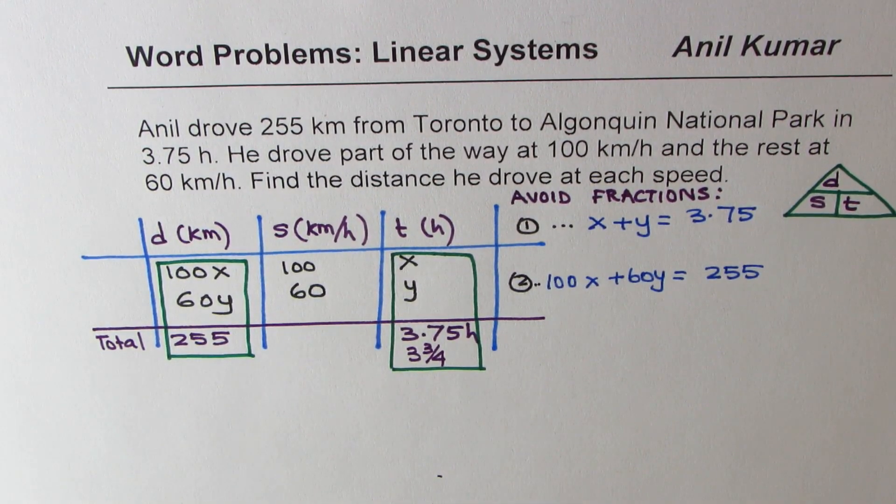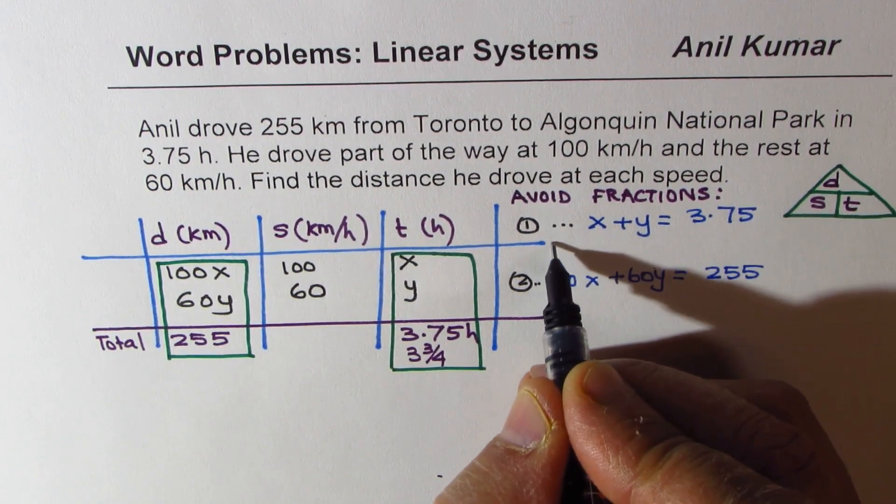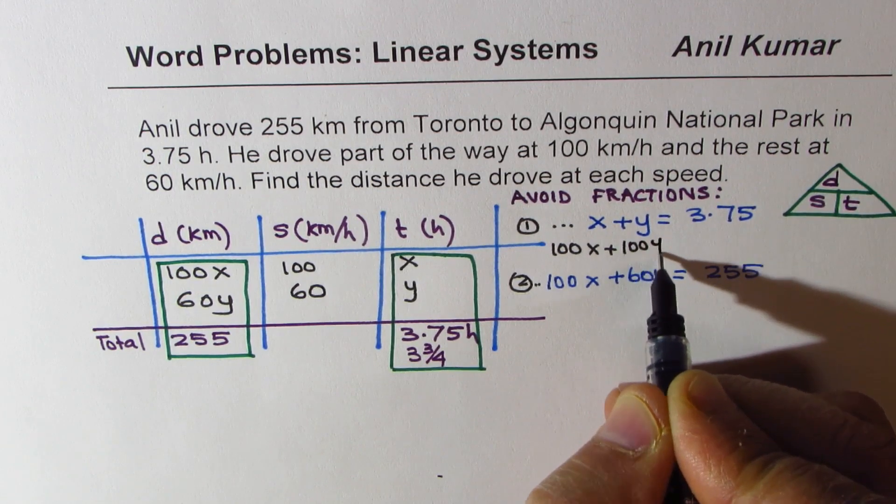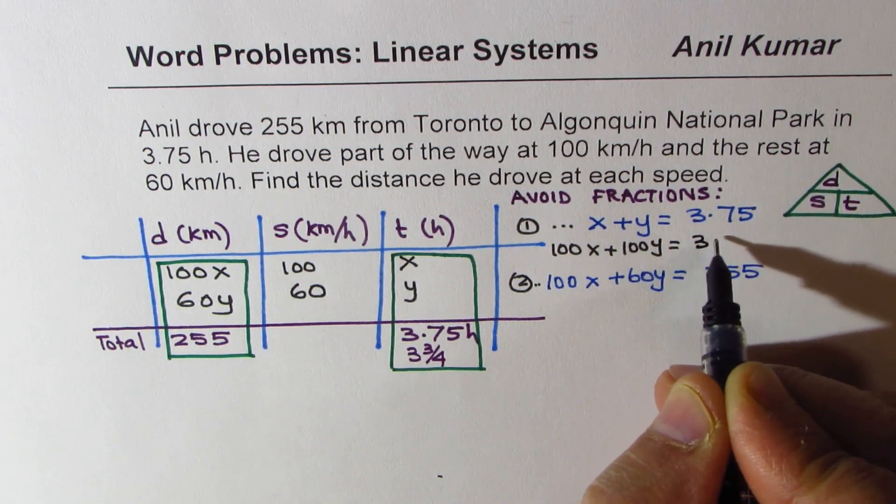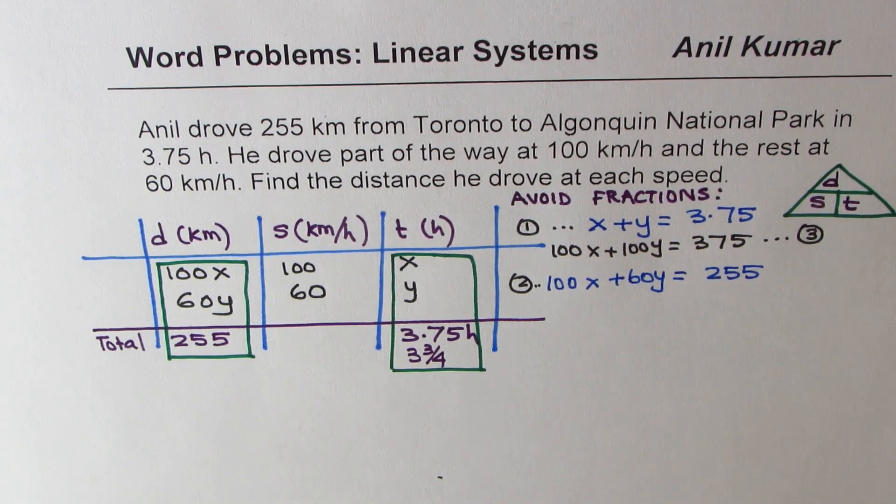To solve, what should we do? Simple. Let's multiply the first equation by 100. So what we get here is 100x plus 100y equals 375. And we get this equation as our equation number 3.